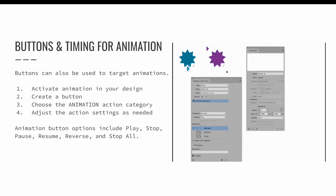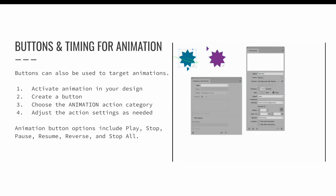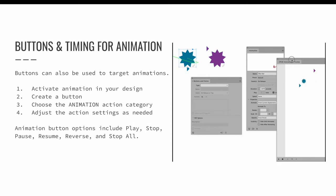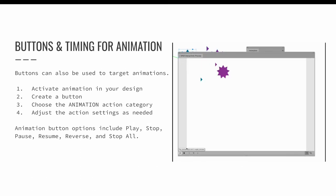In this example, I have set the animation via the animation panel to only work when activated by a button. This option is found via the events dropdown menu on the animation panel — I chose the event that says on button event and turned all of the other options off. Now, since the button is set up to work when I click and release, the animation only plays when I click the button.